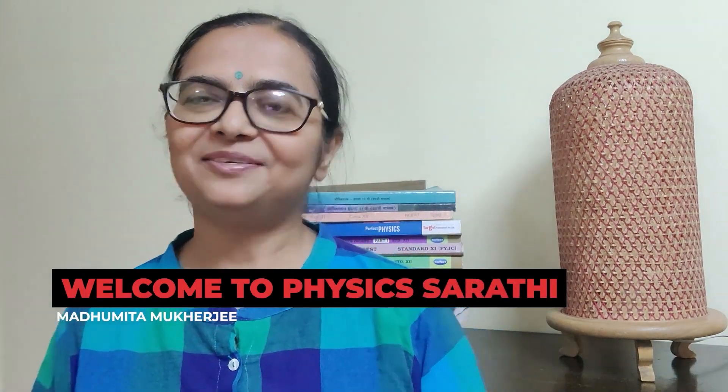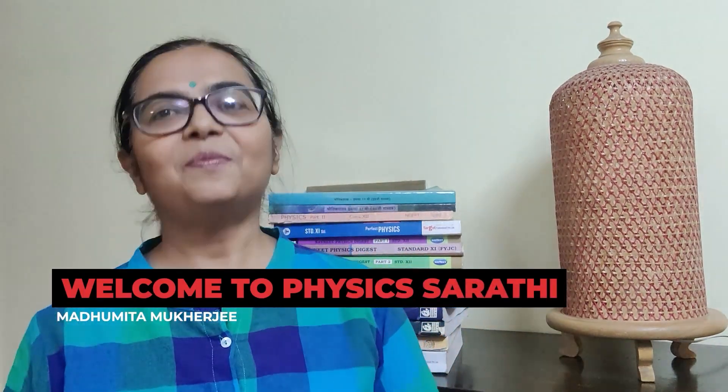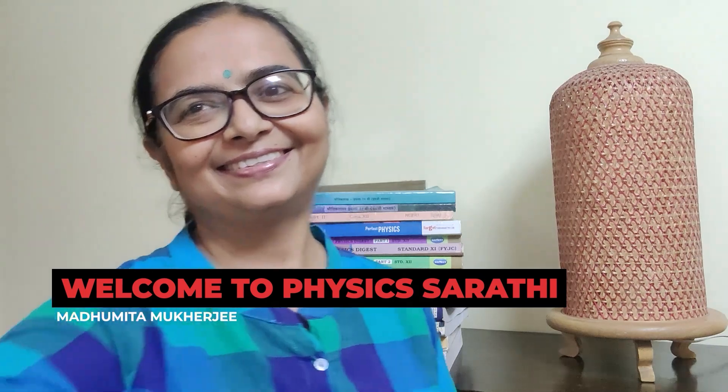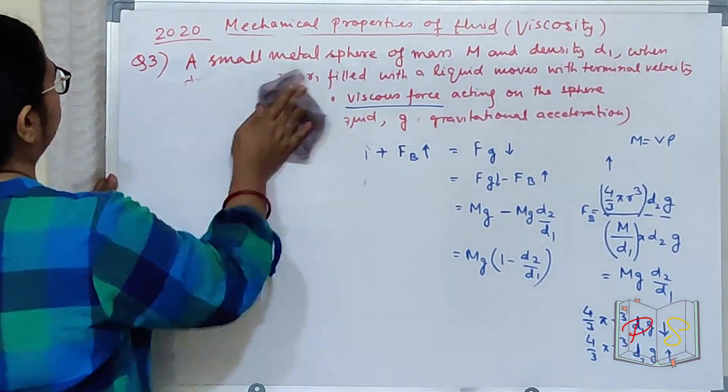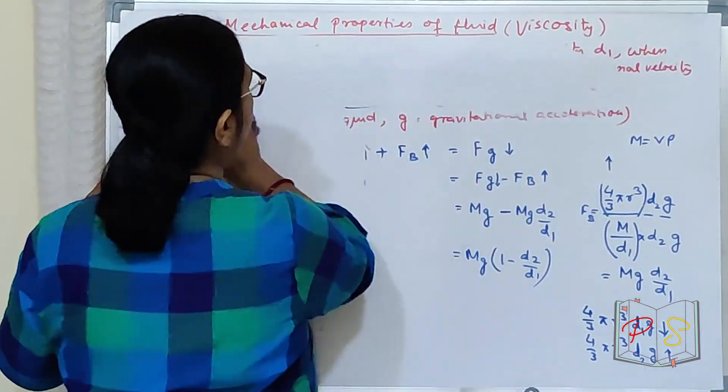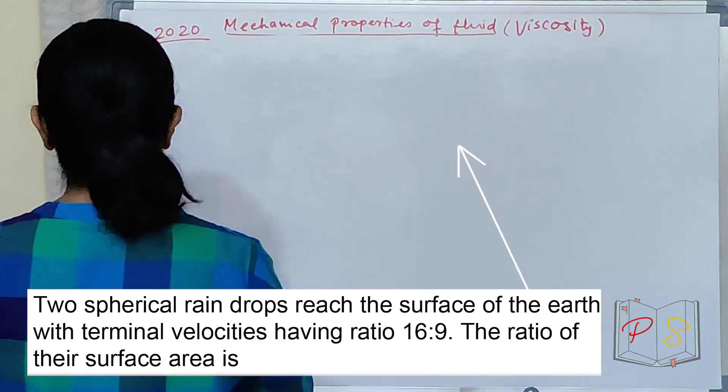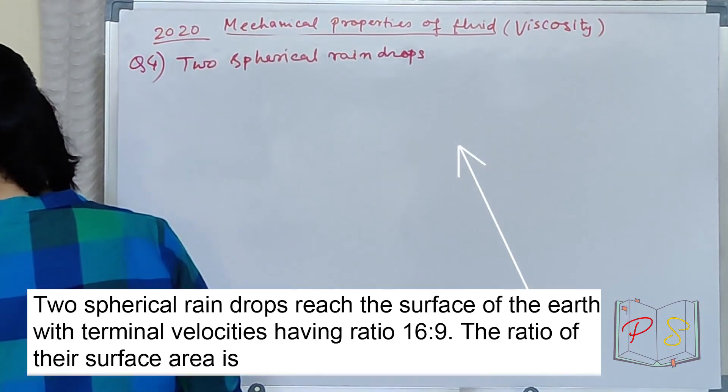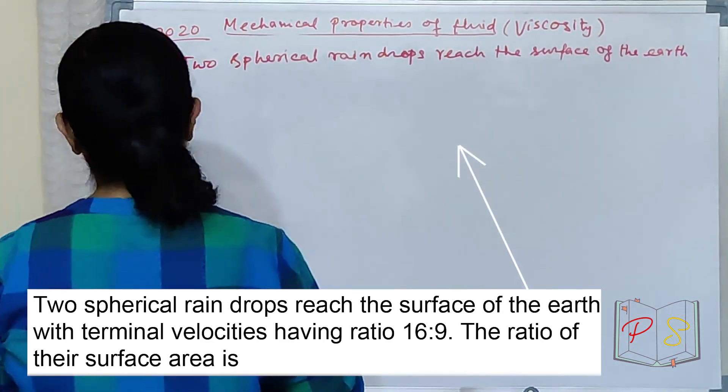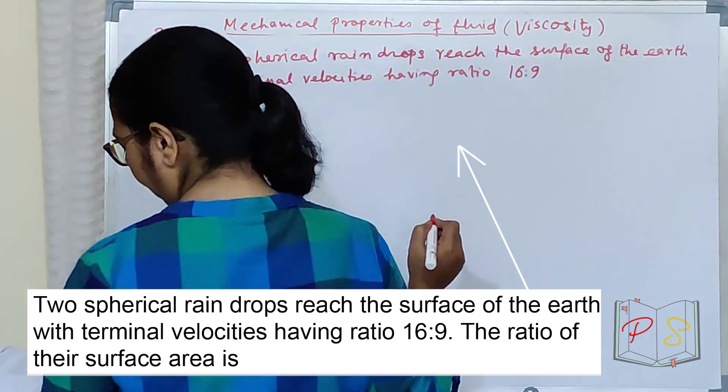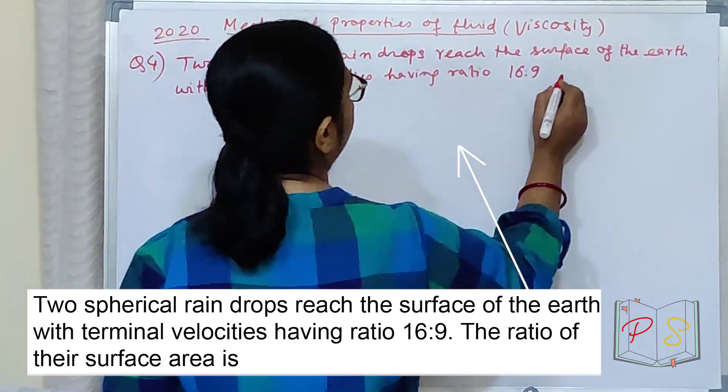Hi, I am your Physics Arthi Madhumita Mukherjee. I promise about a sporting in your business. 2020 ka aurink question dehte hai. Mera question number 4. Go rhea hai two spherical raindrops reach the surface of the earth with terminal velocities having ratio 16 is to 9. The ratio of their surface area is.